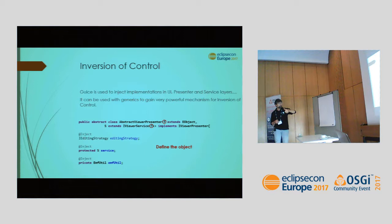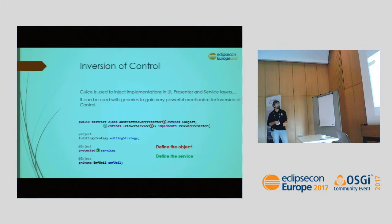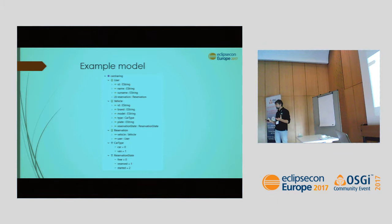For example, we have an abstract viewer presenter — an abstract class handling a type T extending EObject and a service S extending the service that uses type T. When you specialize this class and create the concrete class, the right service is injected automatically. In this demo we will show a small example.